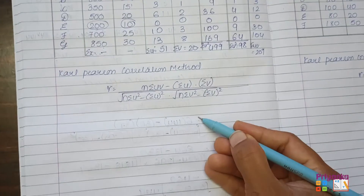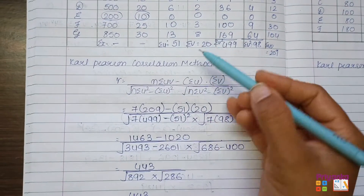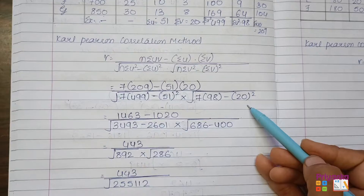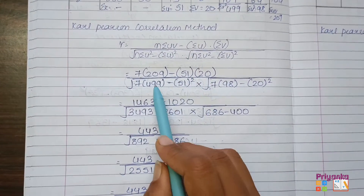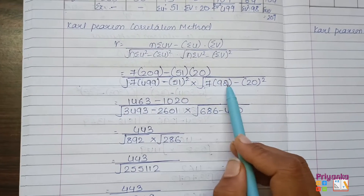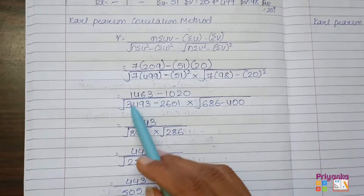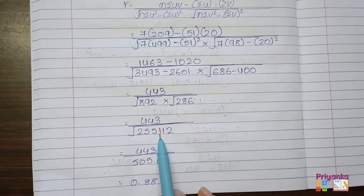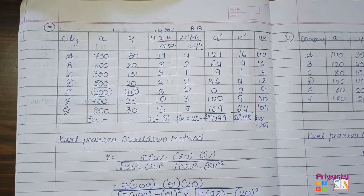Let's put all the information into the Carl Pearson formula and calculate. After substituting all values, carry out the multiplication, subtraction, and then remove the square root as shown in Question 1. Multiply the square root terms and remove the final square root. The answer for Question 3 is 0.88.